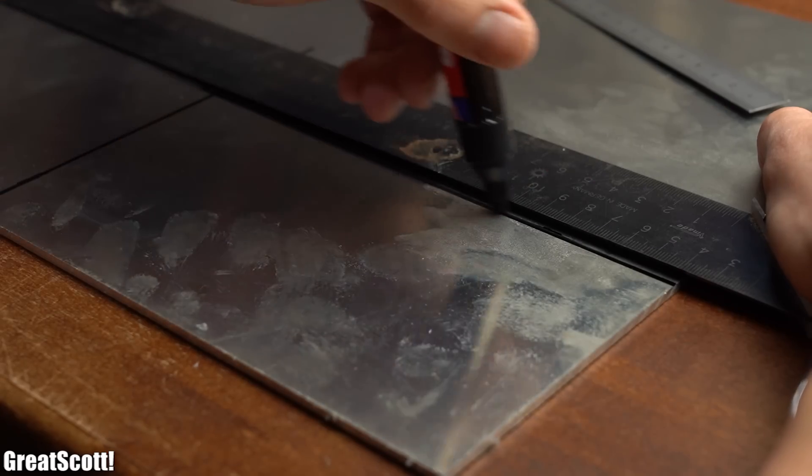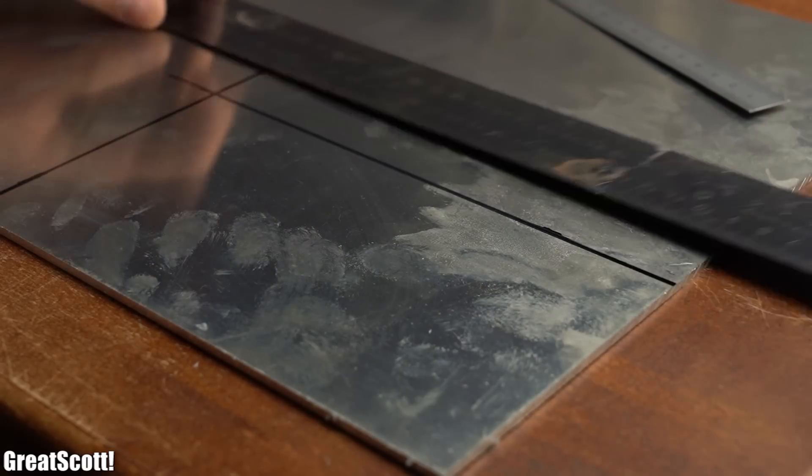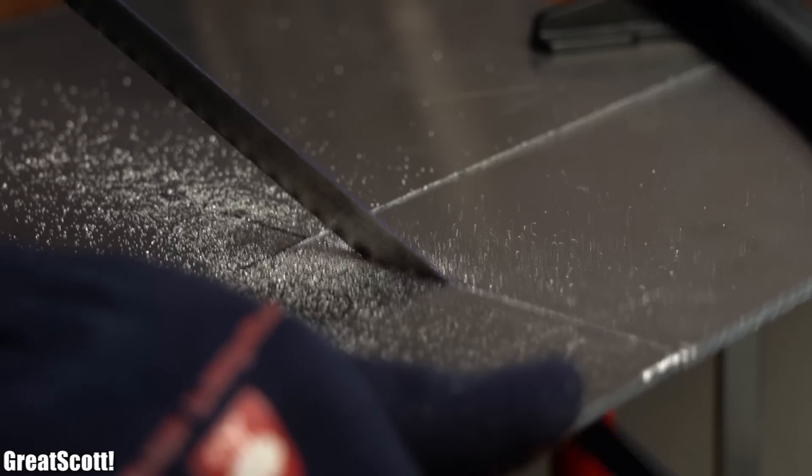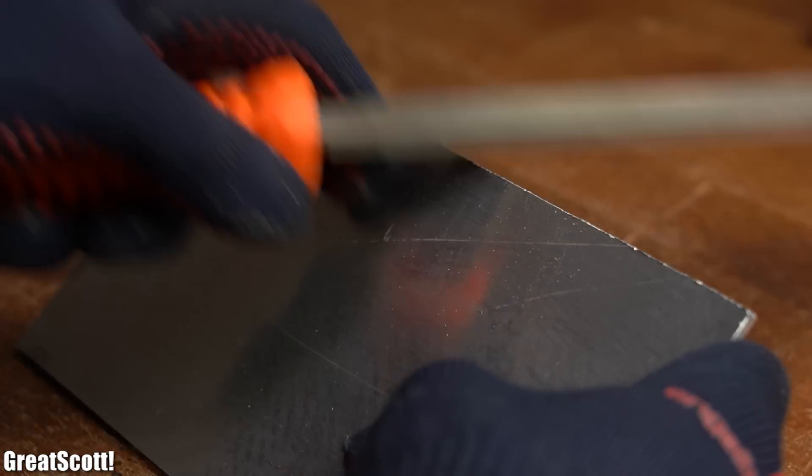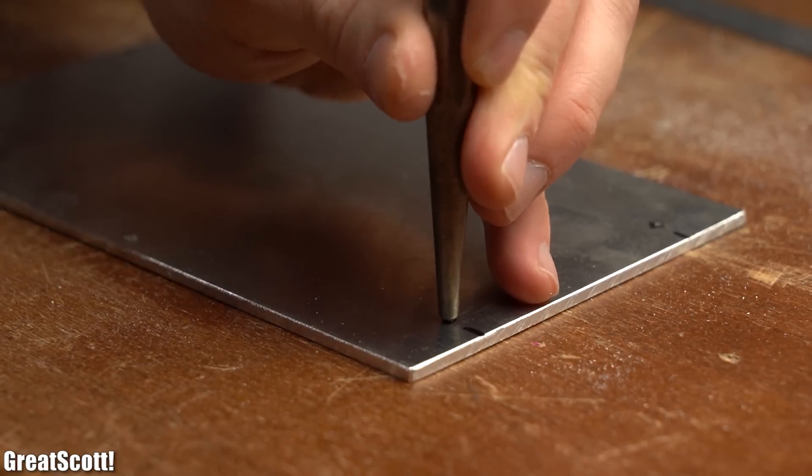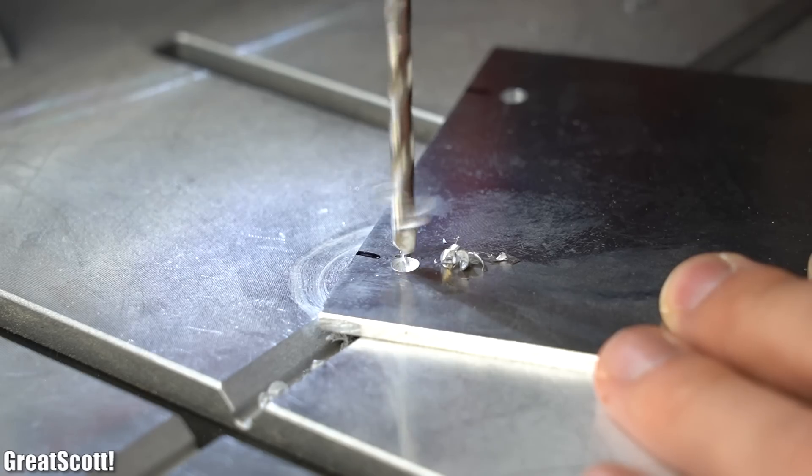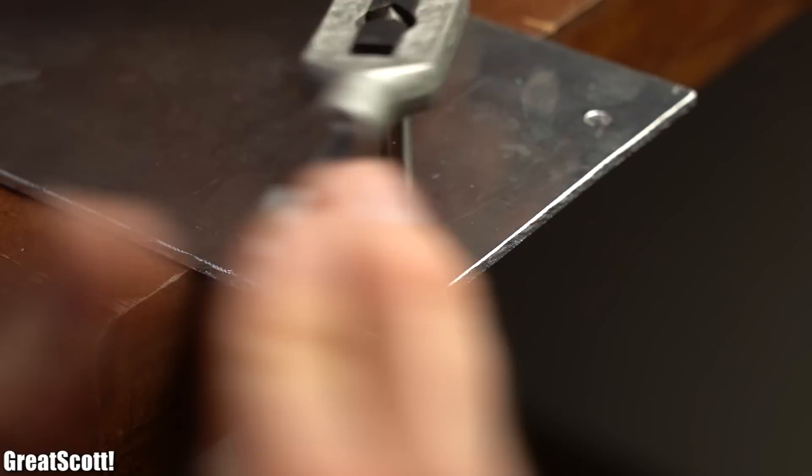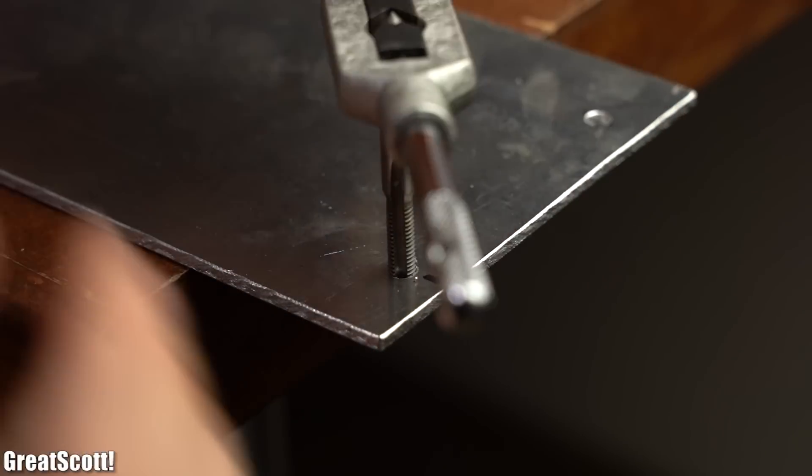But nevertheless after I marked the outline of the heatsink onto the aluminum I cut it out with a handsaw, removed the sharp edges with a file, marked the foreholes for the M5 bolts, drilled them with a 4.5mm bit and then created an M5 thread into each of them.